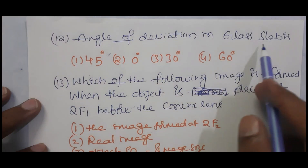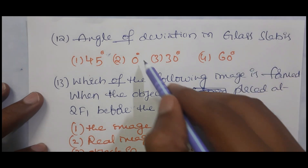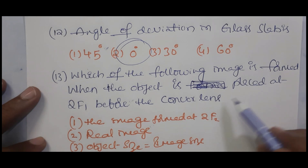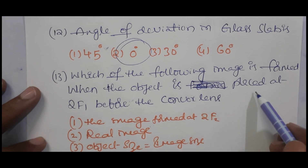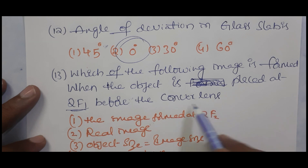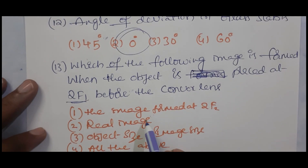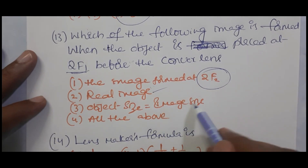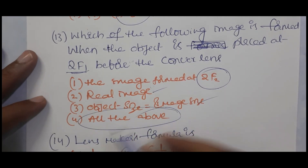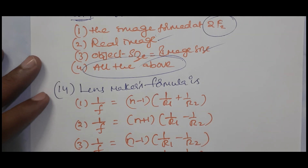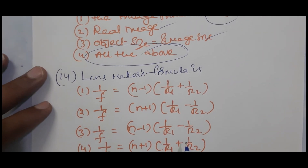The angle of deviation in a glass slab is 0 degrees. Next: when an object is placed at 2f₁ (center of curvature C₁) before a convex lens, the image is formed at C₂, that is 2f₂. It is a real image and the object size equals the image size. So the answer is 'all of the above.'